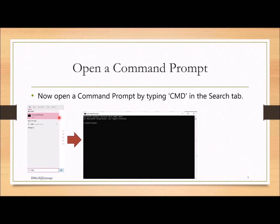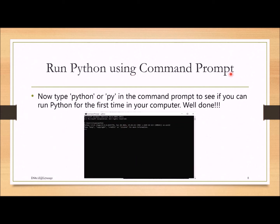In Windows 10, type CMD in the search window, or go to the top of any folder and type CMD there. This opens a window called the Command Prompt. Depending on where you started CMD, you can see your file directories. Now type python or py and press Enter — you should see the version number and other information, and the prompt will change.